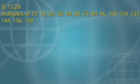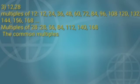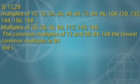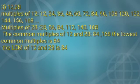The next one is 12 and 28. Multiples of 12 means we have written the table of 12, table of 28. The common multiples of 12 and 28 is 84 and 168. The lowest means the smallest common multiples is 84. So, the LCM of 12 and 28 is 84.